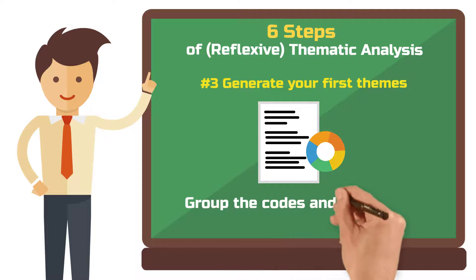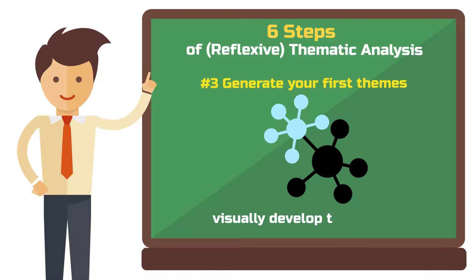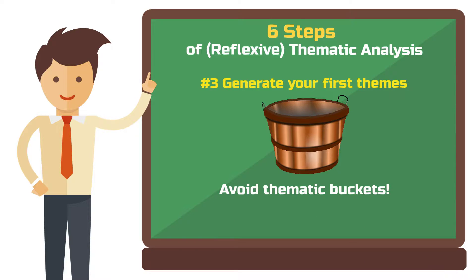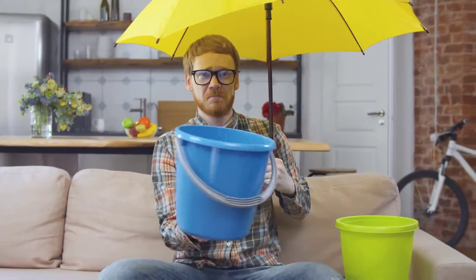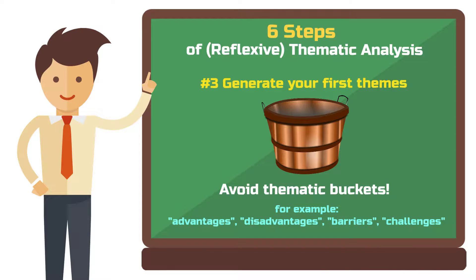You can also work with mind maps and visually develop the clusters. It's also possible that within a larger cluster you have smaller clusters or sub-themes. However, try not to make it too complicated — in the end, having three to six main themes is a good amount to work with. The biggest mistake in coding and also in generating themes is the use of so-called buckets. A classic bucket includes categories or themes like 'advantages,' 'disadvantages,' 'barriers,' or 'challenges.' It's crucial to steer clear of these.